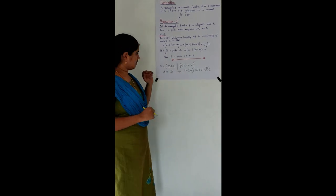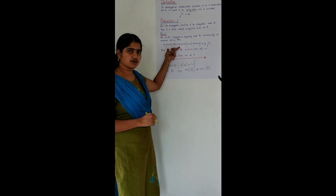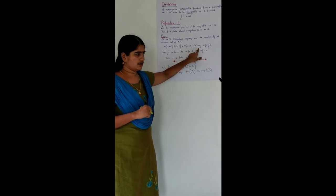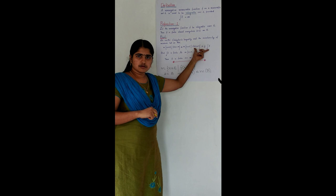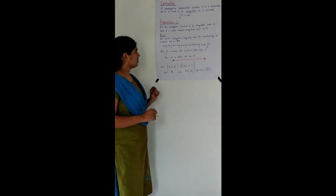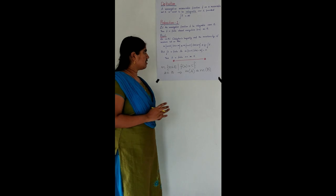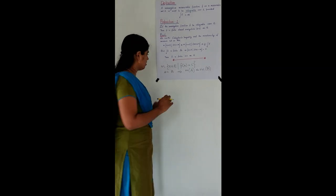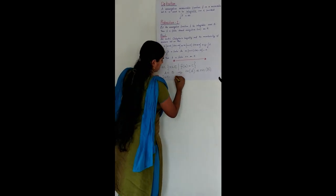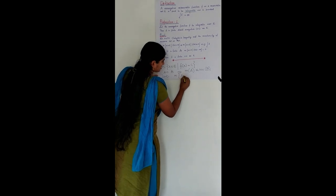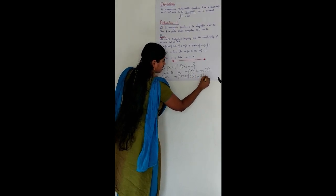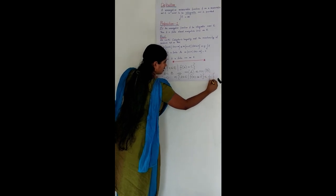By monotonicity of measure, we have that the measure of the set of all X in E such that F(X) is greater than or equal to N bounds the measure of {F=∞}. And by Chebyshev's inequality, for a non-negative measurable function F defined on a measurable set E, and for any positive real number lambda, the measure of the set {F ≥ λ} is less than or equal to (1/λ) times the integral over E of F.